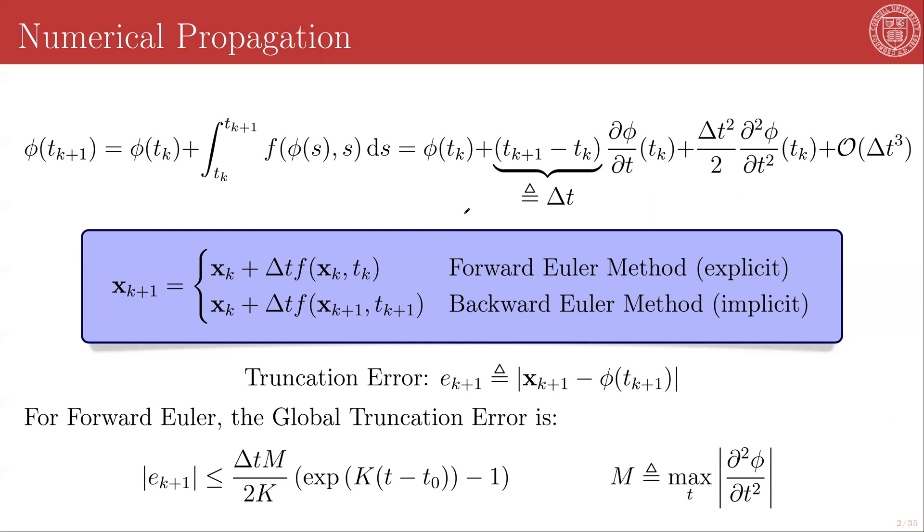So in order to quantify the error, we return to our Taylor expansion, and we define the truncation error at time point k+1, or at step k+1, as the absolute difference between x(k+1) and the true solution, the true state, sometimes known as the flow, φ(tₖ₊₁).